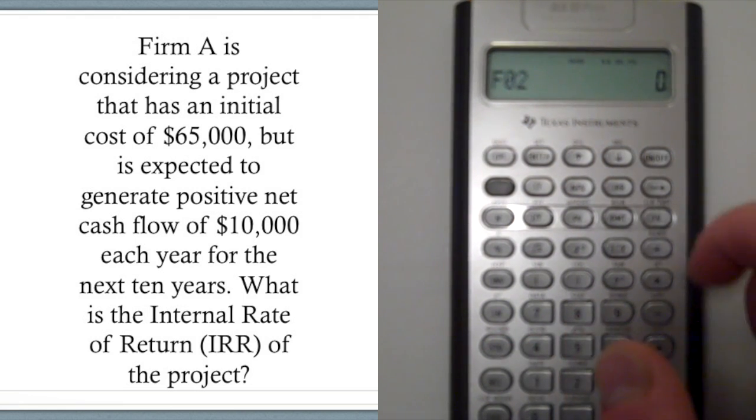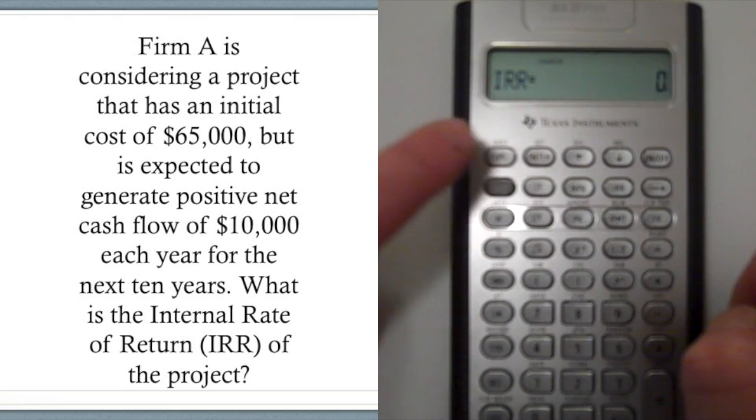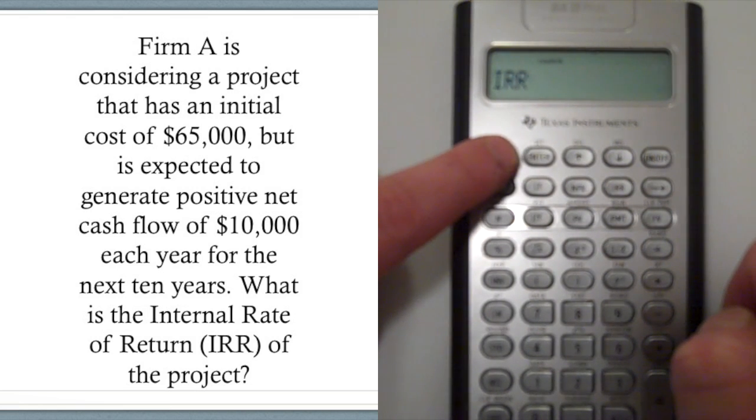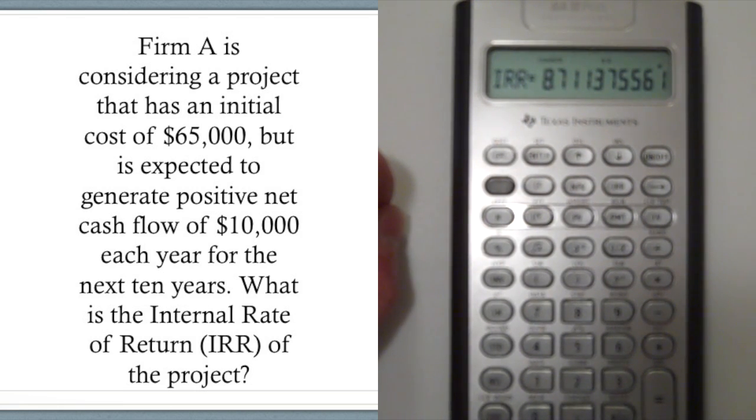So the next step is to hit IRR, which is right here. And then the compute button, which is in the top left hand. And we end up with 8.71% IRR. So the internal rate of return for this project would be 8.71%.